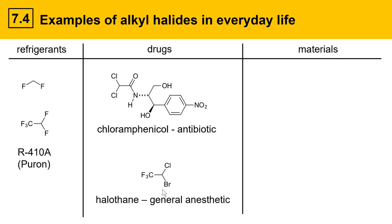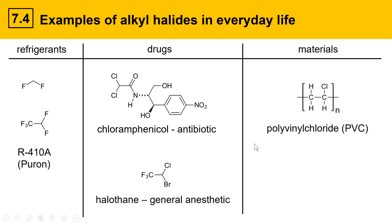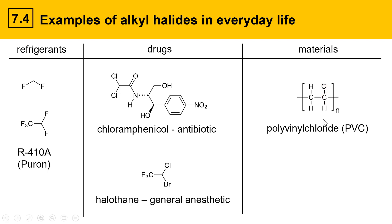Another class of important molecules in everyday life are materials, such as plastics. An example of a plastic that is an alkyl halide is polyvinyl chloride, or PVC — an alkane with chlorines on it. These are very long molecules called polymers. The brackets indicate that the unit inside is repeated N times, where N can be quite large. This repeating unit with the chlorine-carbon bond is what makes up PVC, which is commonly used in pipes.